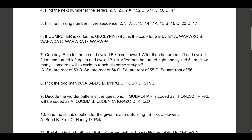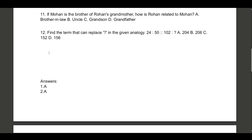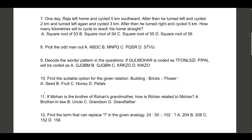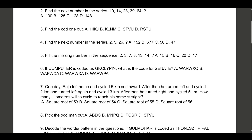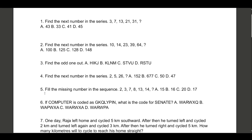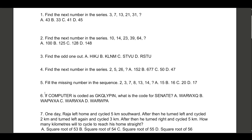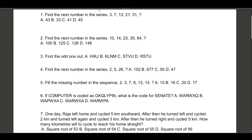Option A, 2A, is the correct answer. Let's go to the next question: find the odd one out — H I K J, K L M, M N... okay, let me copy it first and then explain.